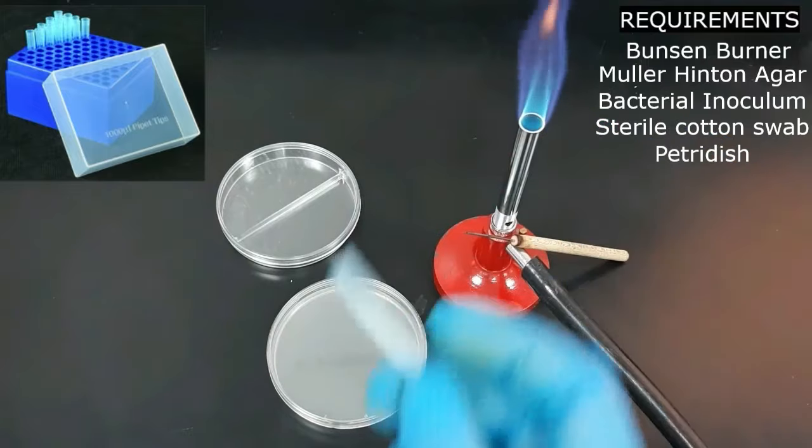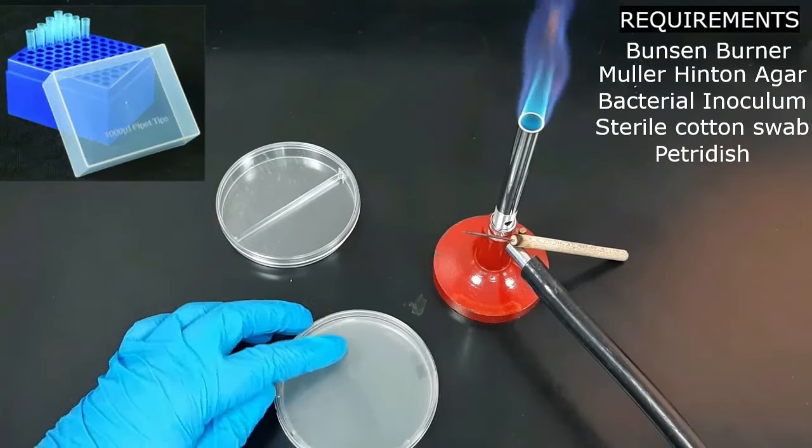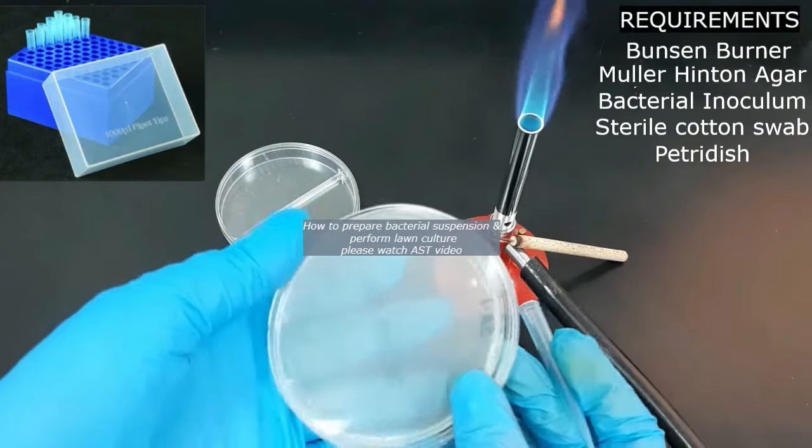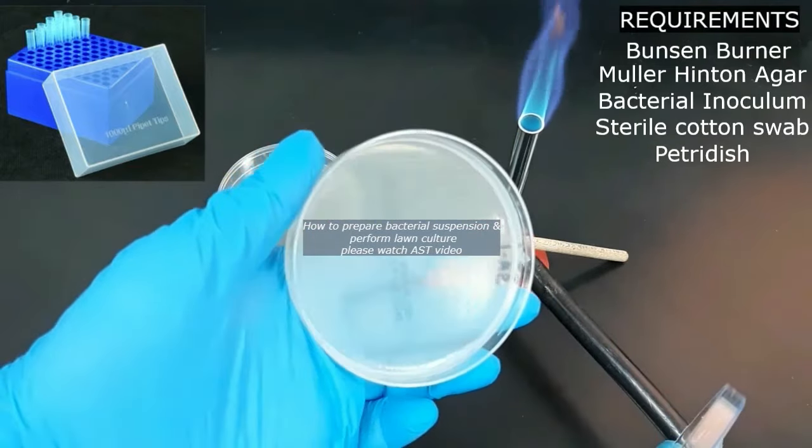Let's start the procedure. First, inoculate the bacterial suspension into Muller Hinton agar by lawn culture method. You can see here this plate is already inoculated with the bacteria.